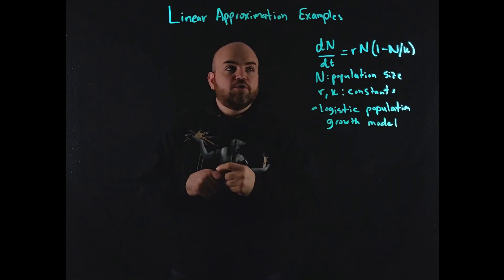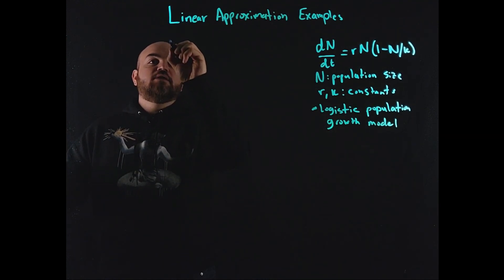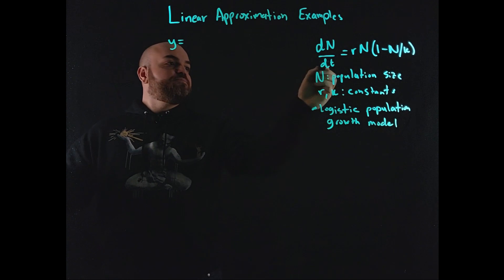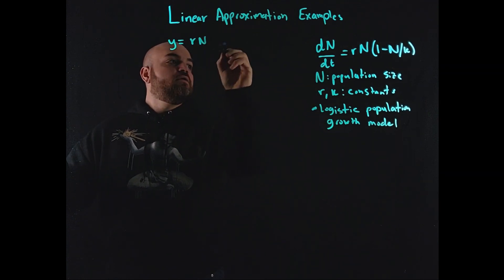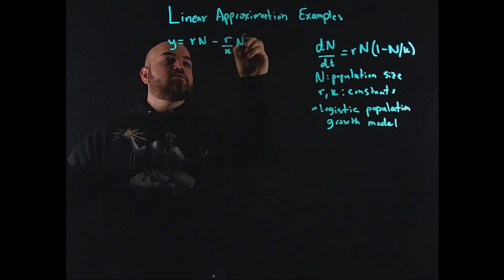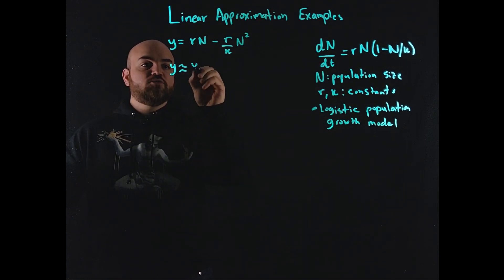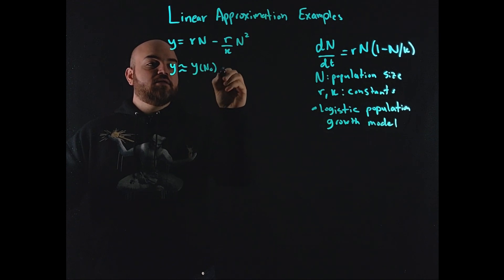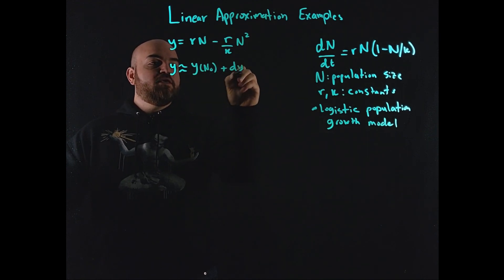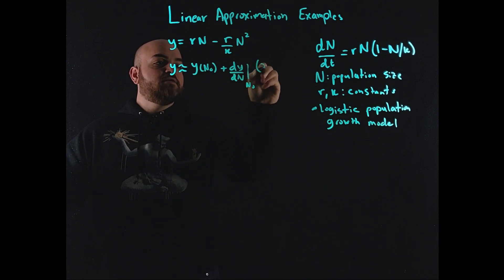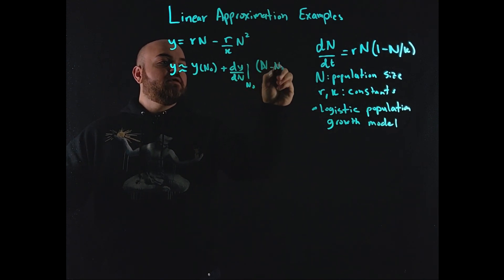So how do we do this? Let's rewrite this as y is equal to rn minus r over k n squared, right? And we can approximate this, again, linear approximation with a Taylor series expansion, which is y at n naught plus dy dn at n naught, n minus n naught over 1 factorial. First order Taylor series approximation.